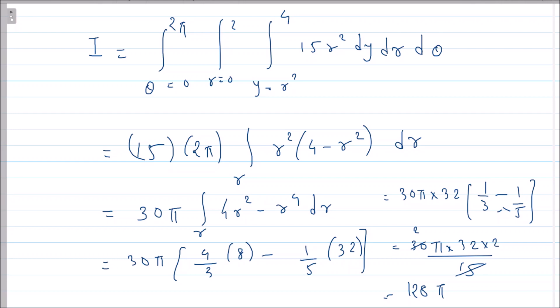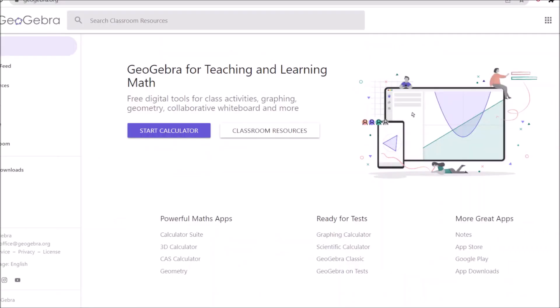So answer is 128π which is nothing but our A option. So I hope this is clear. Well if you want to see what the region will look like, you can take the help of GeoGebra. So once you go to this GeoGebra website, over here at the top square, you just click and then click on 3D calculator.